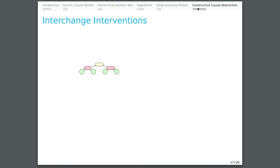We refer to such interventions as interchange interventions. In an interchange intervention, a causal model processes a base input, but intervened variables are fixed to be the values they would have taken on for a source input.